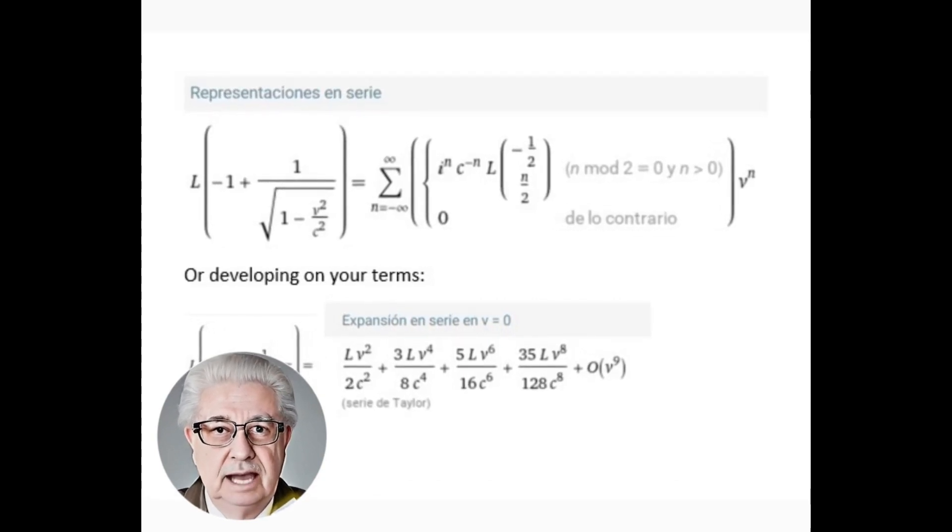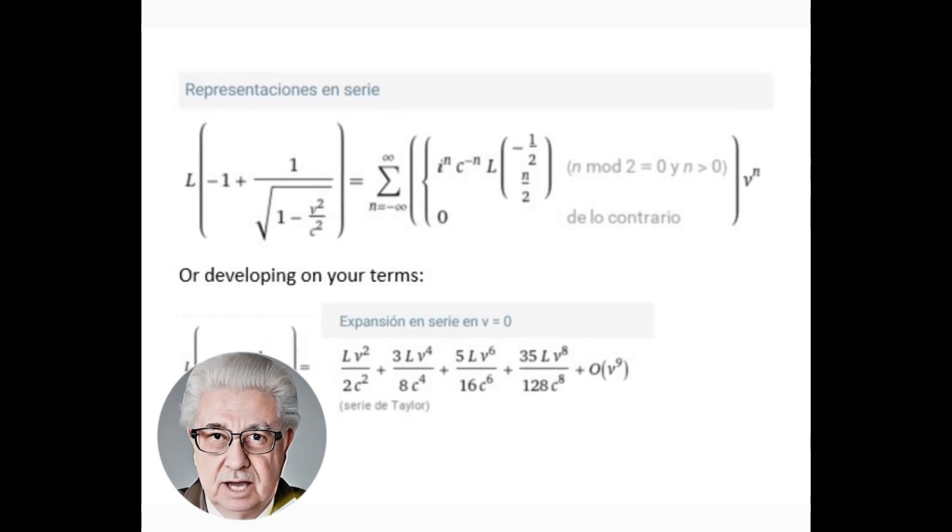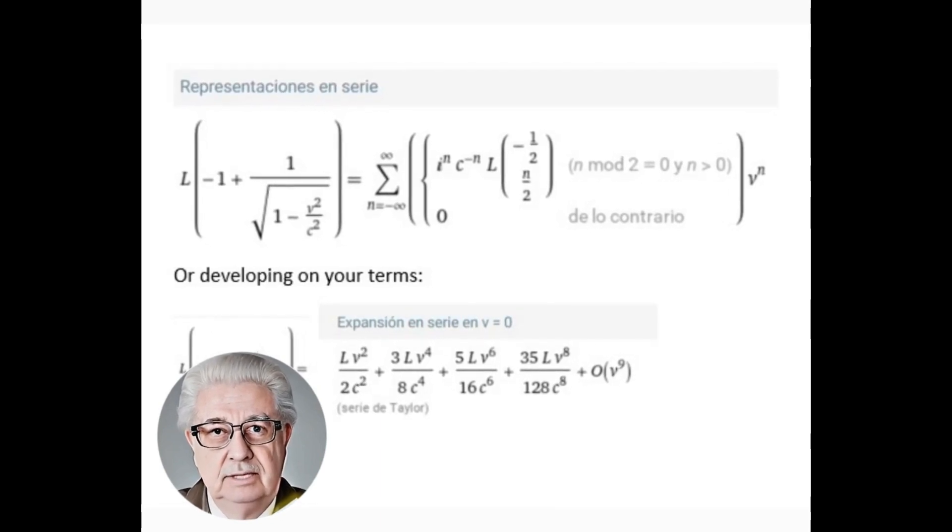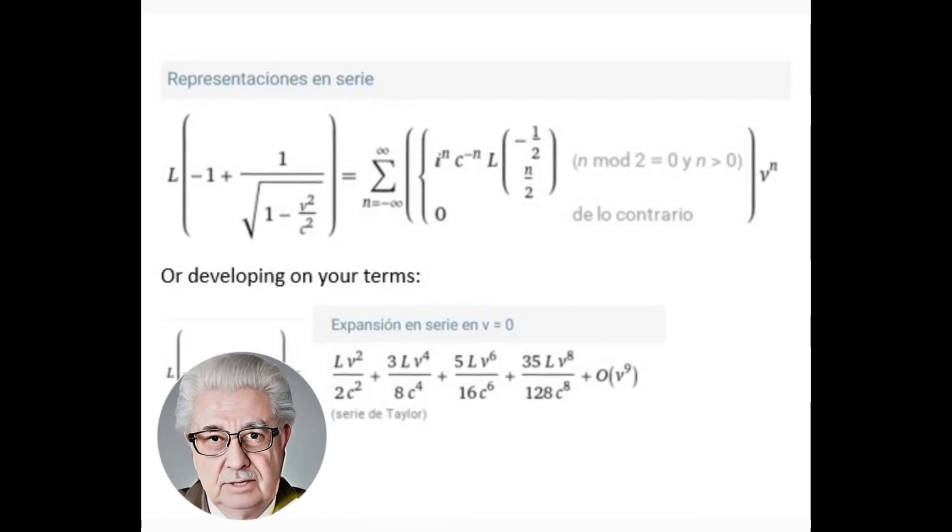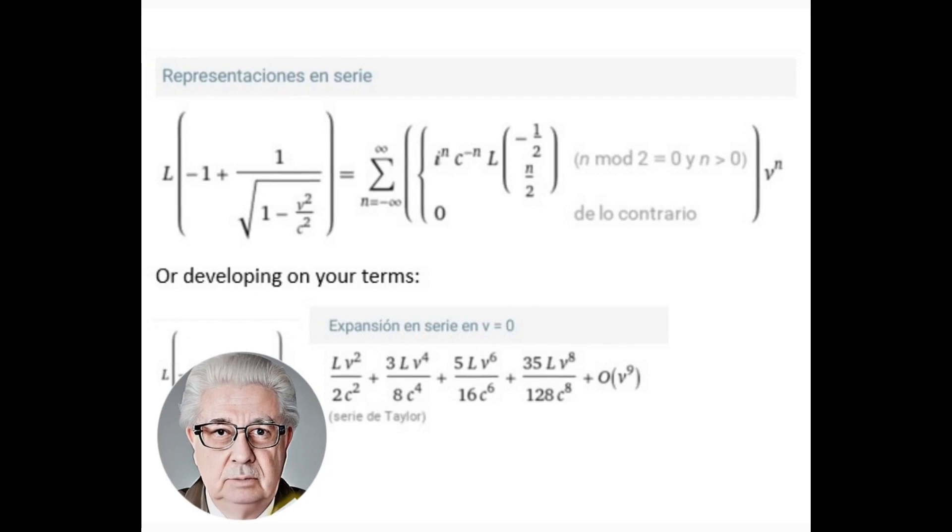However, it is important to note that the accuracy of this expansion depends on the term speed of the body over the speed of light raised to the power n, and that the expansion is only valid for values of the relative velocity of the bodies that are much less than the speed of light.